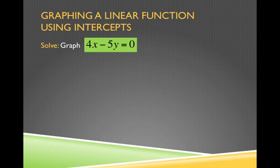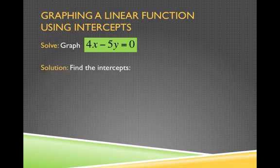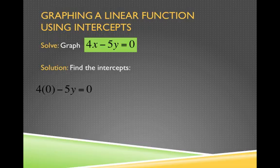Let's go through it again. Here we have 4x minus 5y equals 0. Let's find the intercepts. I plug in 0 for x.